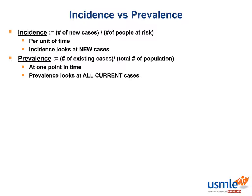Prevalence is the total cases in the population at a given time, divided by the total population at risk at the same time. The population at risk includes only people who could be afflicted by the disease. For example, if you were trying to quantify the prevalence of endometriosis in a community, only women would be included in the population at risk, since men are not at risk for uterine diseases. The total number of cases includes both new and old cases.